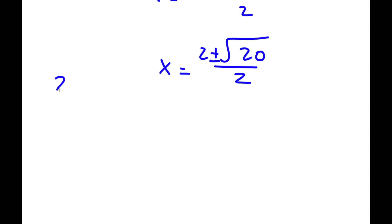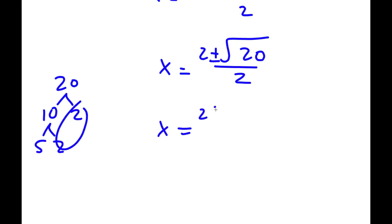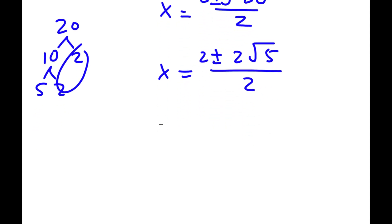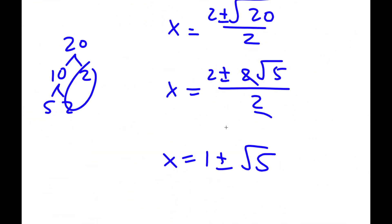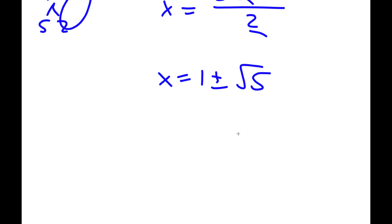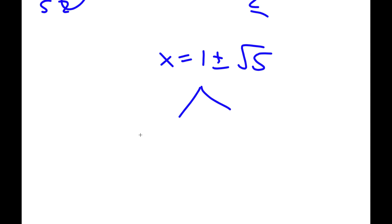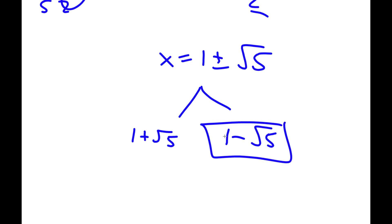Now the square root of 20: 20 equals 4 times 5, so the square root of 20 is 2 root 5. So now I have 2 plus or minus 2 root 5 over 2. Dividing both terms by 2, 2 divided by 2 is 1, and the 2s in 2 root 5 cancel out, leaving the square root of 5. So x equals 1 plus or minus the square root of 5. To be specific, x equals 1 plus root 5 and x equals 1 minus root 5, and these two are my answers.